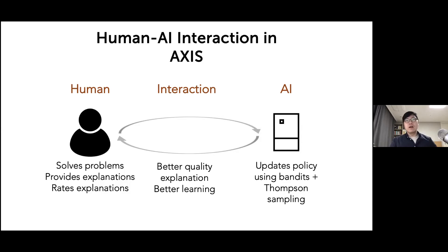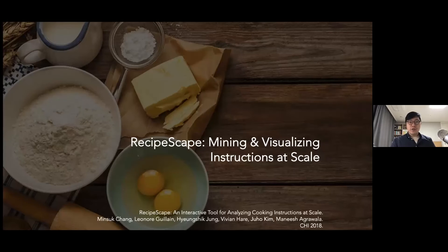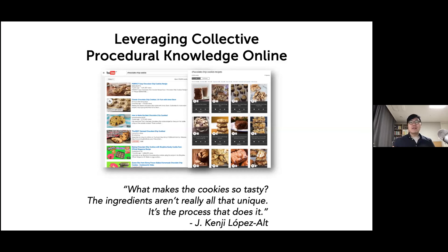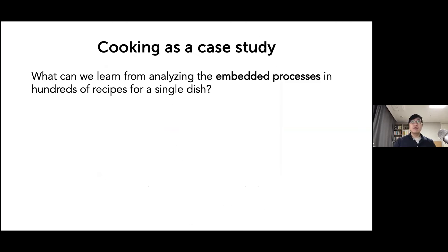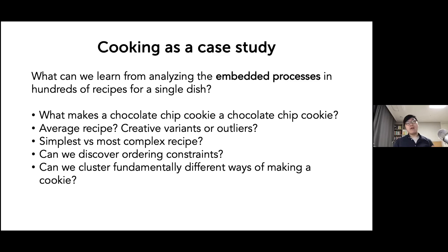That was a brief overview of some of my projects in the space of online education. Now I want to switch gears to cooking, a slightly different domain. Here we worked on a project called RecipeScape, where we were interested in how new recipe websites are almost like a naturally crowdsourced database of different approaches people have. If you want to learn how to make chocolate cookies, you can easily find hundreds or thousands of similar but somewhat different recipes. Using cooking as a case study, we wanted to answer questions like: what makes a chocolate chip cookie a chocolate chip cookie? What is an average recipe, the simplest, most complex? Can we find fundamentally different ways of making a cookie?